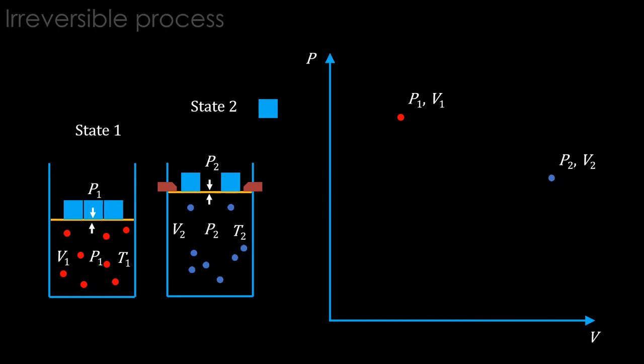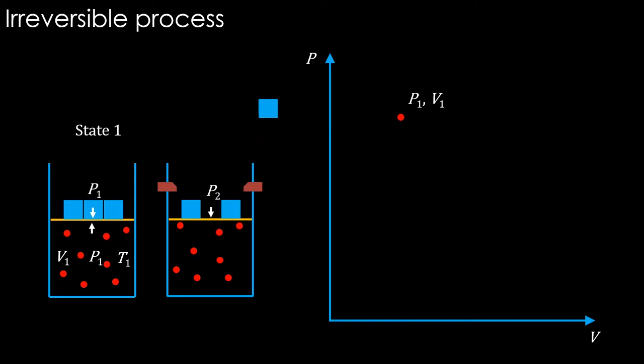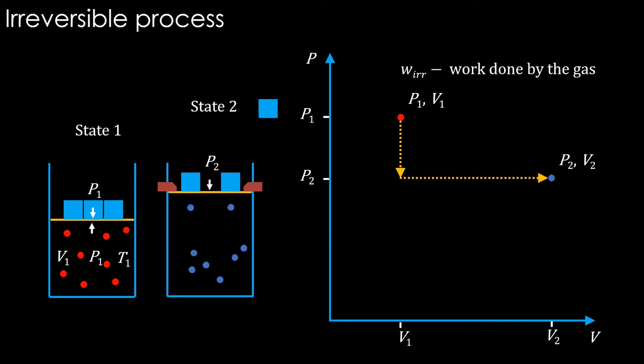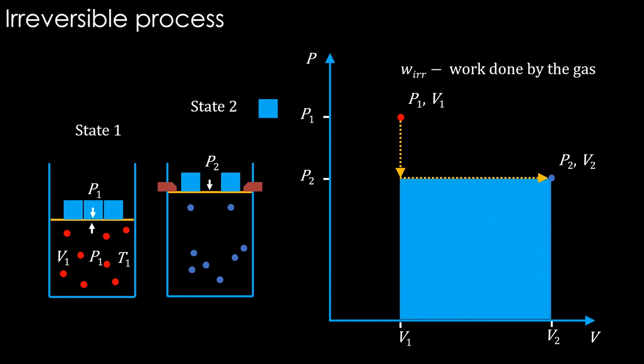Now let us try to have the process path in PV space. We know that in PV space each point represents only equilibrium set of values, but we can use a dotted line path like this to represent irreversible process. When the mass is removed, the pressure from the top drops to P2, and then the expansion occurs against it. Let's calculate the work done. We have been using P delta V type of formula, but we can also make use of the PV space. The area for this rectangle is P2 multiplied by the volume change V2 minus V1, which is basically P delta V. Therefore, area under a curve in PV space is work done.